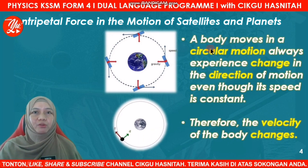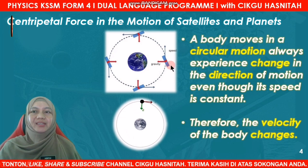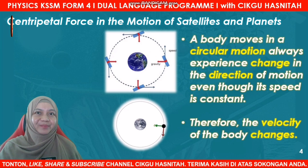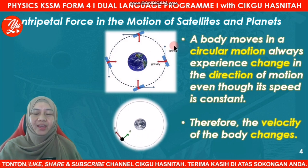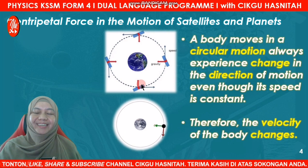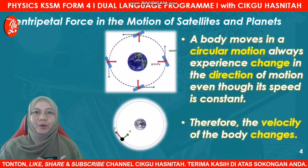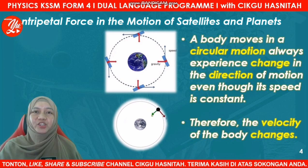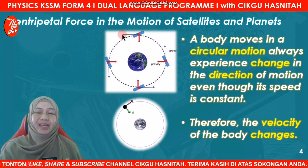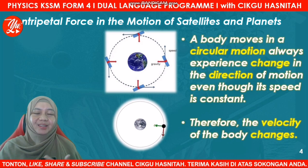A body which moves in circular motion always experiences a change in the direction of motion, even though the speed is constant. For example, at the first position the body moves to the north; at the second position it moves to the west; at the third position it moves to the south; and at the fourth position it is moving to the east. So we say that the velocity of the body changes when they change position or direction, even though they are moving at constant speed.